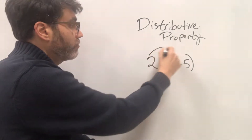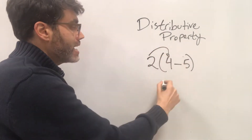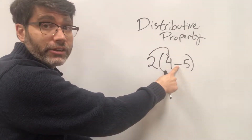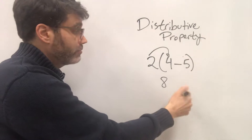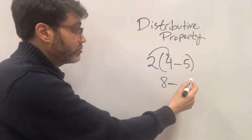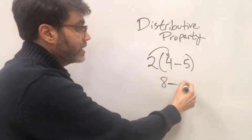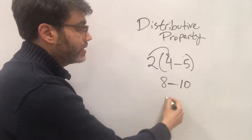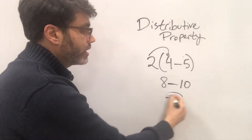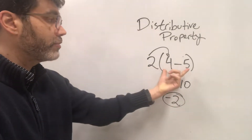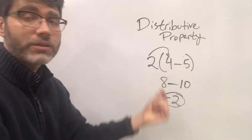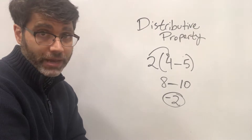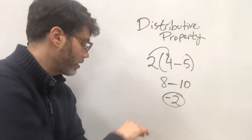So 2 times 4 is going to be 8. Then whatever the operation is inside, you just bring it down — so we bring down the subtraction sign. And then 2 times 5 is 10. 8 minus 10 is also negative 2. That's exactly what we got with the PEMDAS approach. We get the exact same answer.